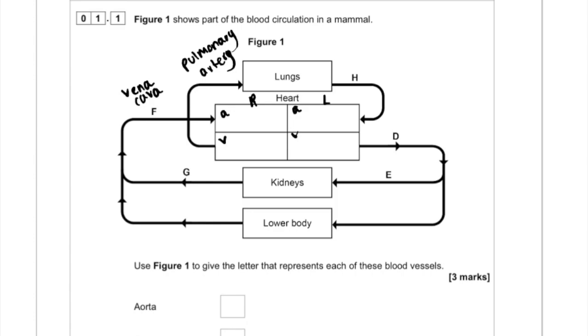Then in the lungs, this blood will be oxygenated and then taken back to the heart through the pulmonary vein. It will be pumped through the left side of the heart before leaving again via an artery called the aorta, where it will travel to the rest of the body.